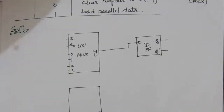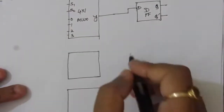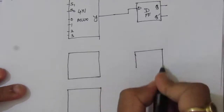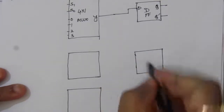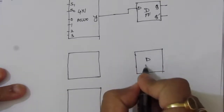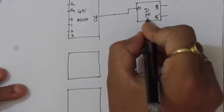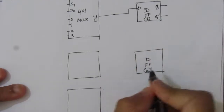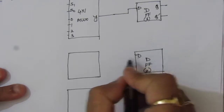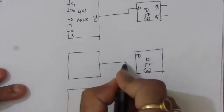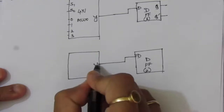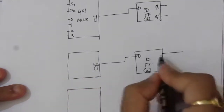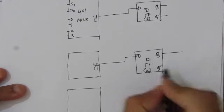Let me draw all the D flip-flops. Here also we have a D flip-flop — this is flip-flop 1, this is flip-flop 2. Each has one D input, the output of the corresponding multiplexer Y is connected to the D input, and each has a normal output Q and a complemented output Q-bar.